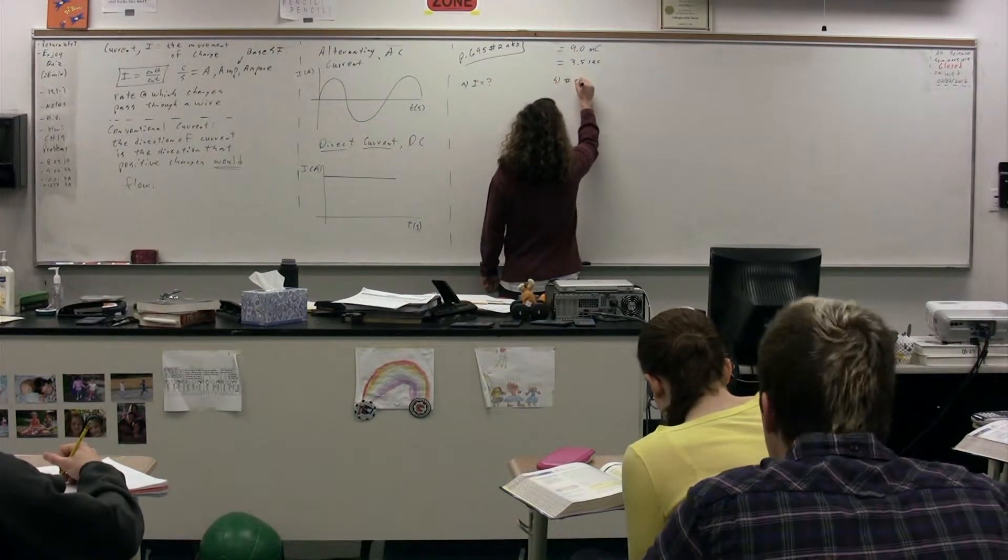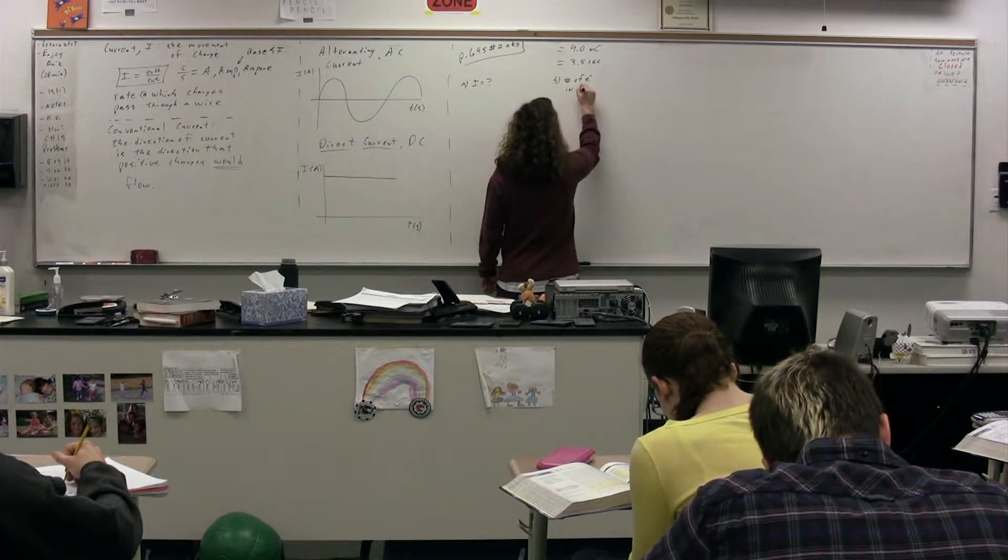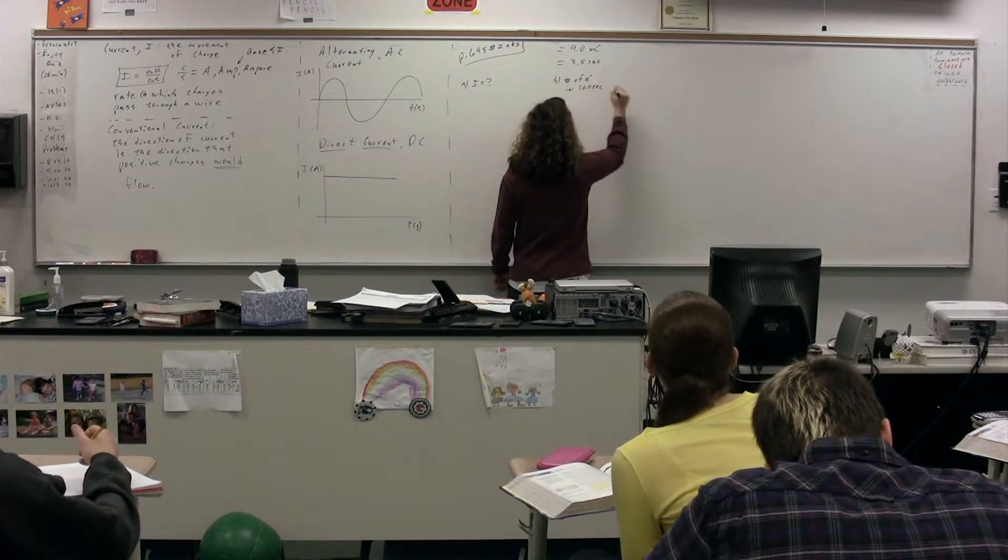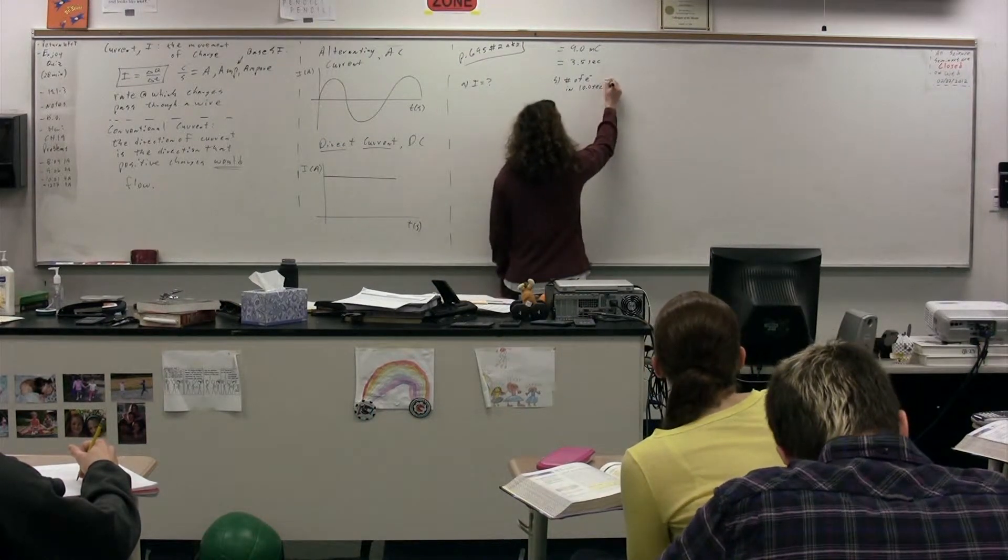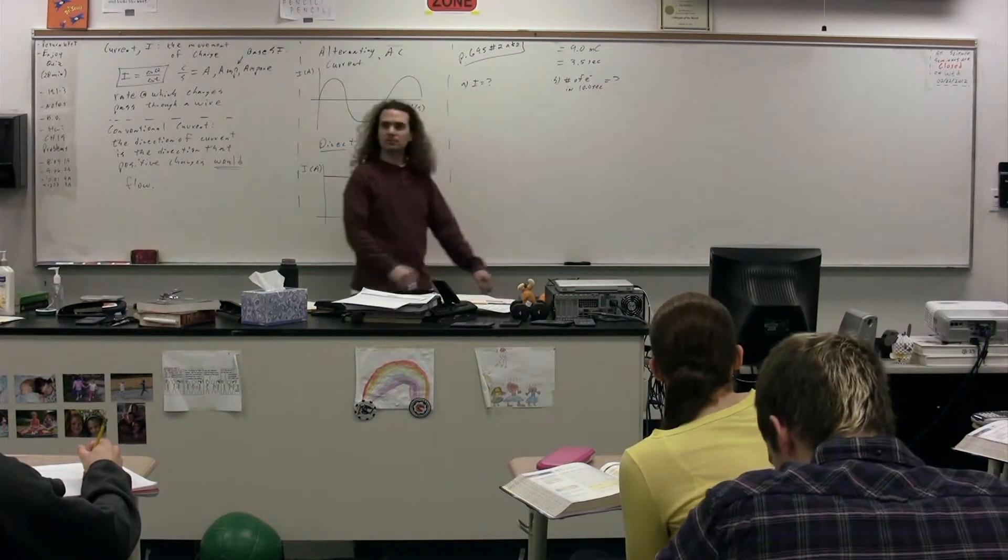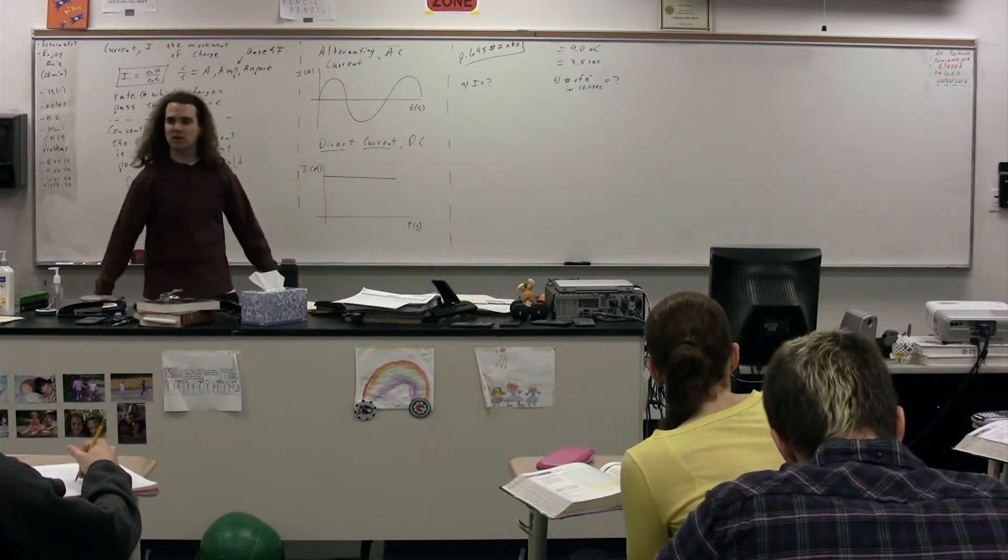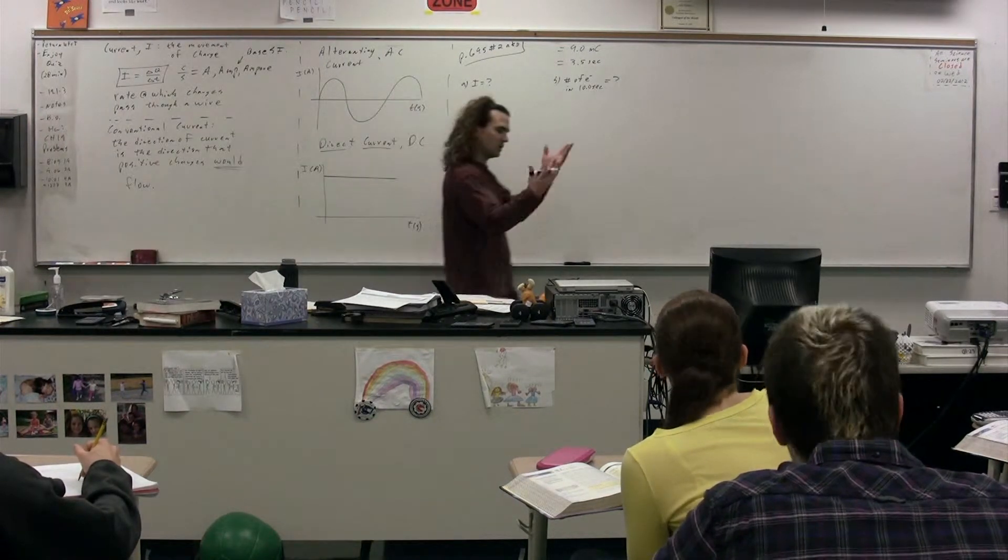In three and a half seconds. Keep going. What is the current in the wire? And how many electrons pass through the cross-sectional area in ten seconds? So we have some sort of cross-sectional area of some sort of material, micro wire.